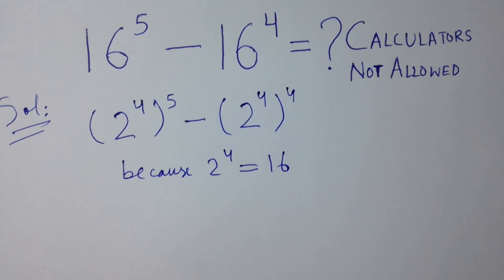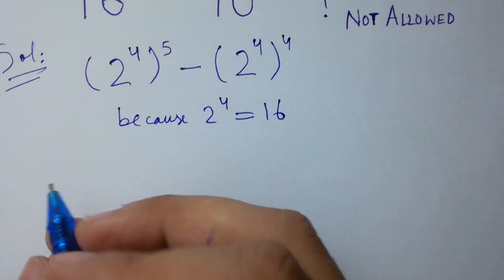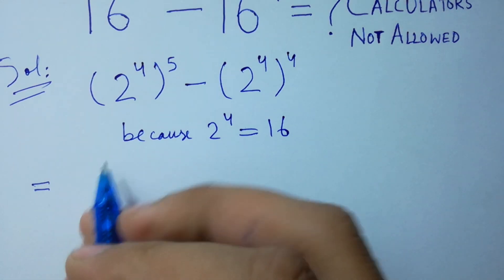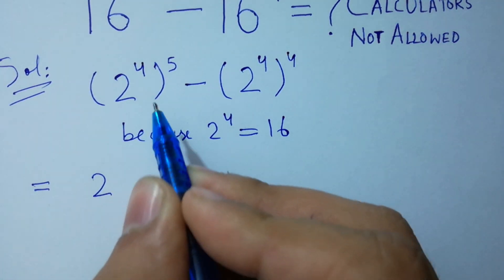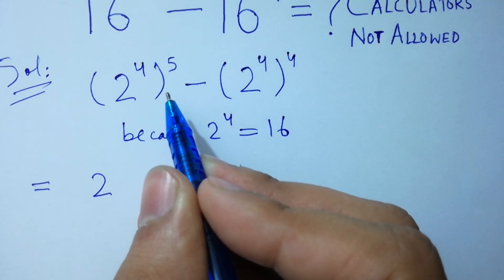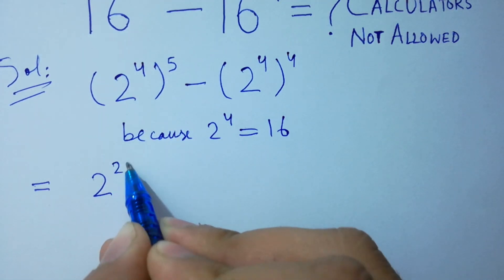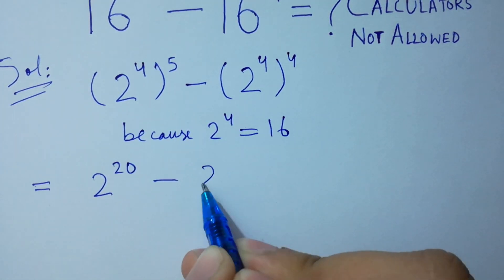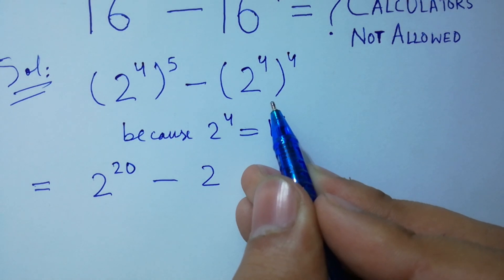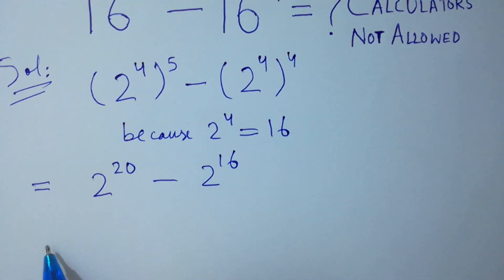I hope you understood. Here, 2 times 4 times 5 equals 20, minus 2 times 4 times 4 equals 16. Clear?